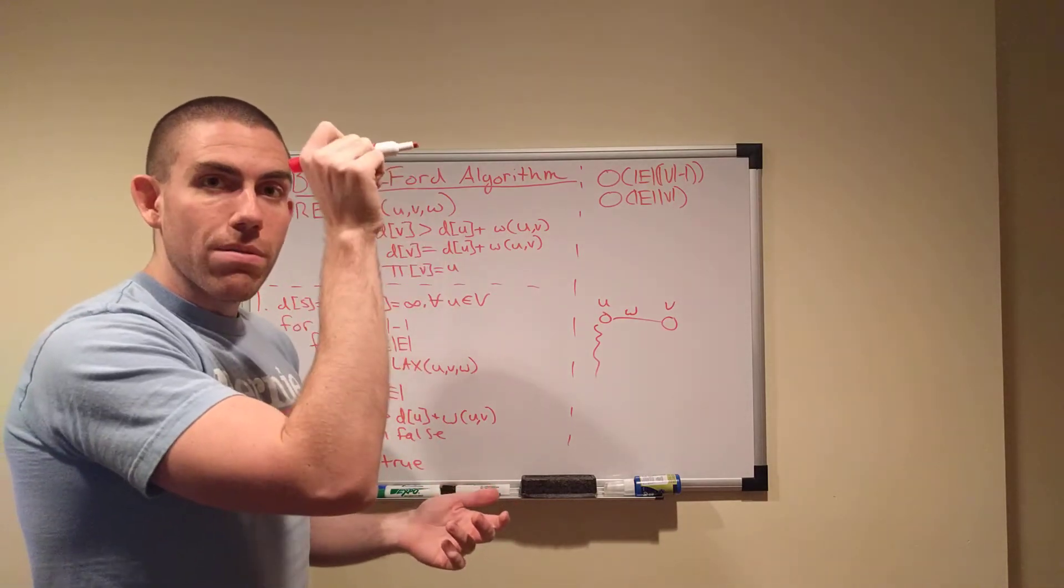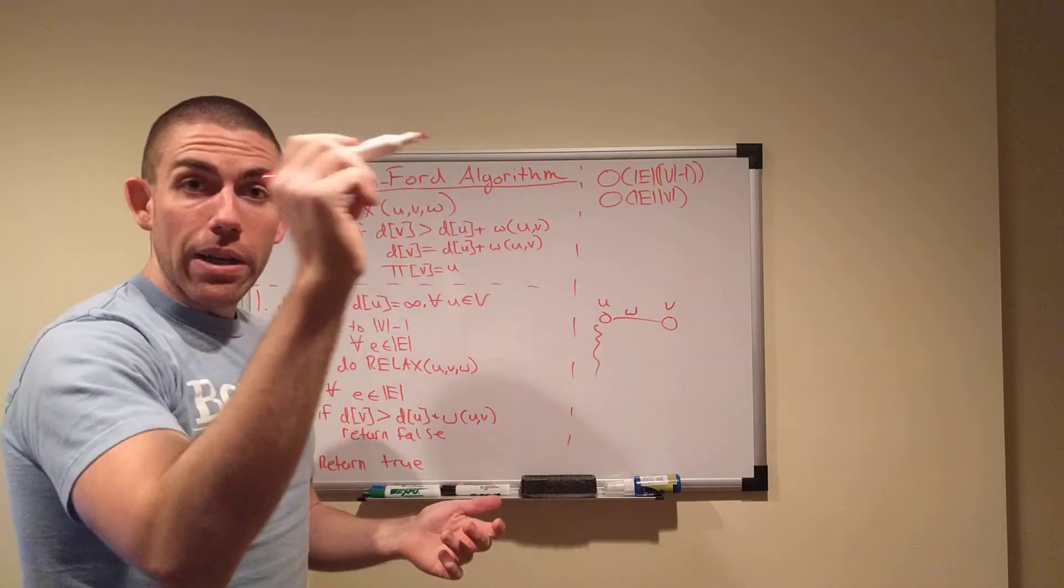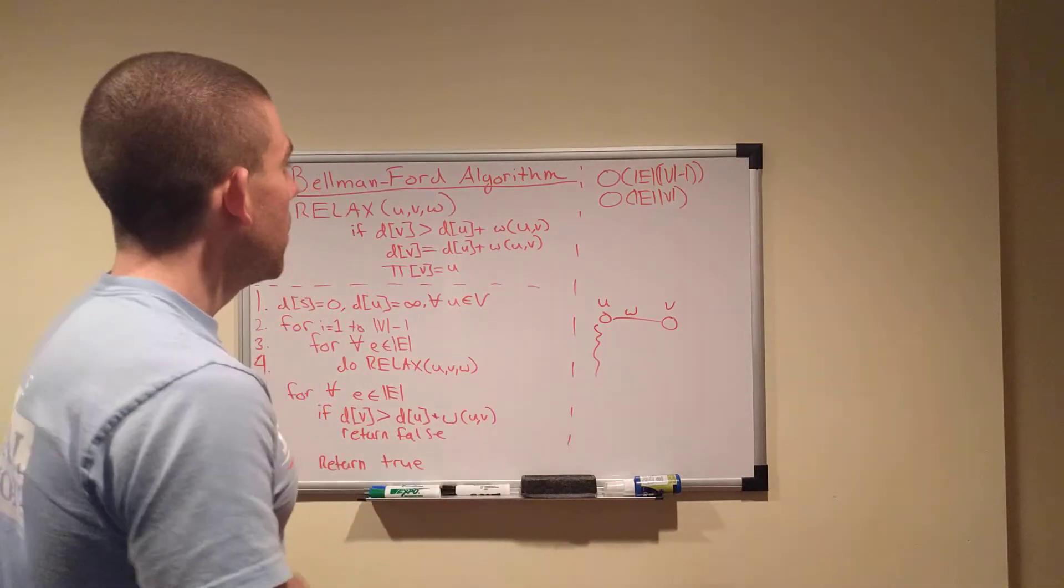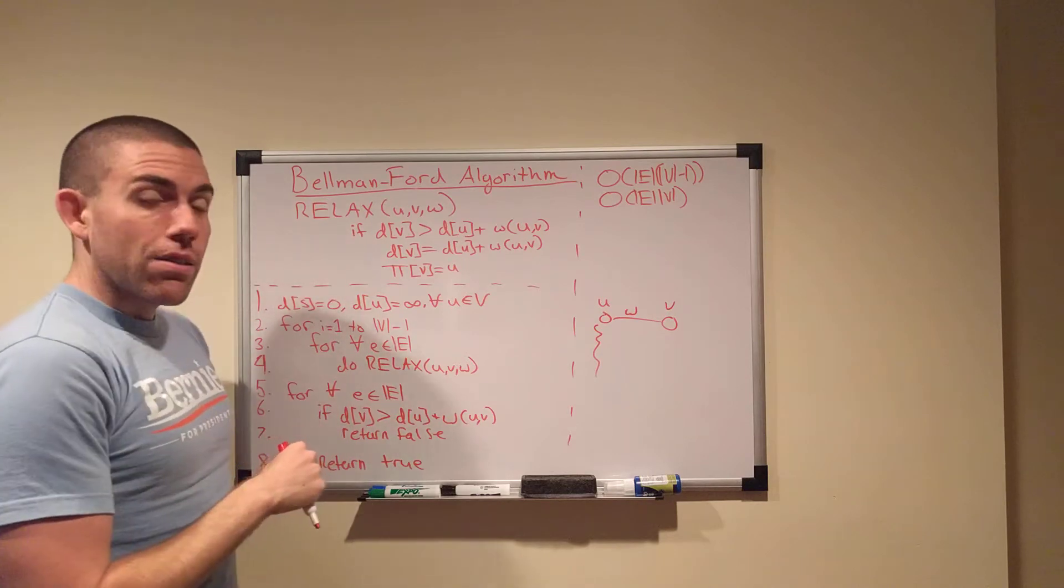as opposed to what Bellman-Ford normally does, which is just prints out the shortest paths. It says, this is a total weight X, total weight Y, total weight C, and all that. This is more useful. It's an important concept.